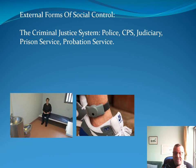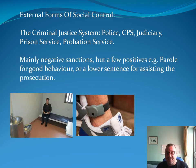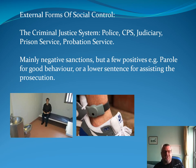These agencies generally use negative sanctions — things like an ankle tag or solitary confinement. But don't forget there are a few positive sanctions within the CJS as well, for instance getting parole for good behaviour or a lower sentence for assisting the prosecution. Generally though, in the criminal justice system it's negative sanctions — if you do this, this is what's going to happen to you.